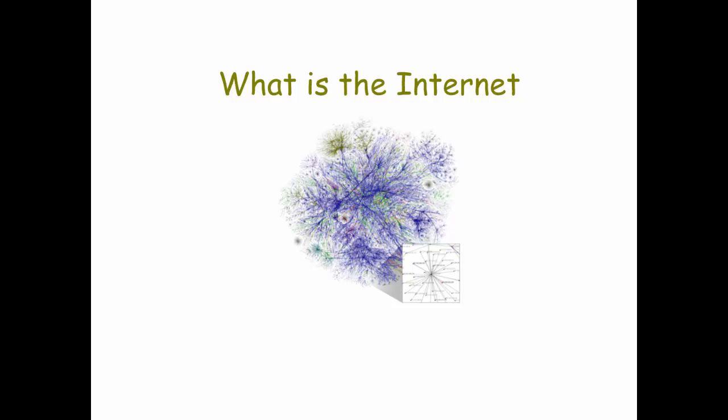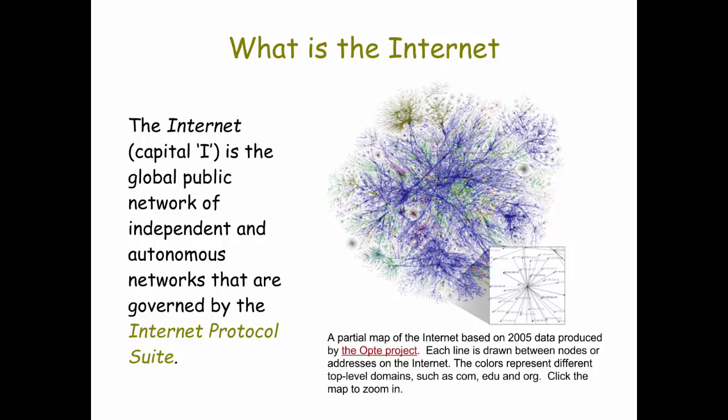In this presentation we're going to talk about the Internet, one of the seven big ideas in the Computer Science Principles curriculum. The Internet, with a capital I, is this global public network of independent and autonomous networks that are governed by the Internet Protocol Suite. As you can see from the image, it's a network of networks. There may be a network at home, a network through your Internet service provider like your cable or phone company, and a network at work. All of those together that are public make up the Internet.